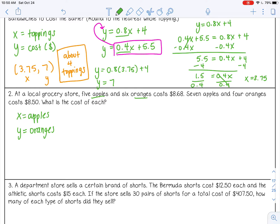All right, so let's write our two equations. So five apples and six oranges equals 8.68. Seven apples and four oranges equals 8.50. All right, so these are both in standard form, so I'm going to use elimination here.